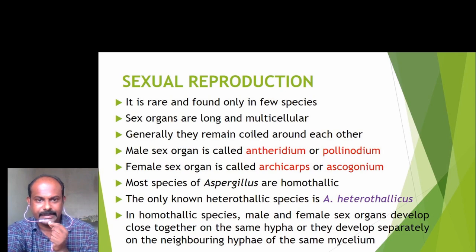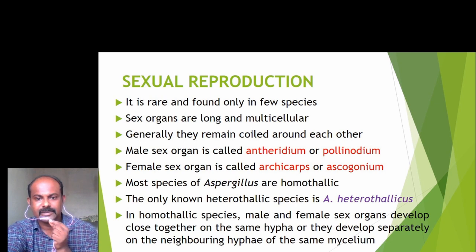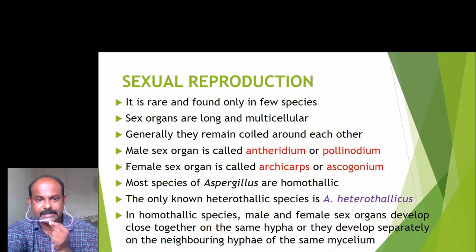Sexual reproduction is very rare and found only in a few species. Sex organs are long and multicellular and generally remain coiled around each other. The male sex organ is called the antheridium or polynodium, whereas the female sex organ is called the archicarp or ascogonium. Most species of Aspergillus are homothallic. The only known heterothallic species is Aspergillus heterothalicus. In homothallic species, the male and female sex organs develop close together on the same hypha or separately on neighboring hyphae of the same mycelium.